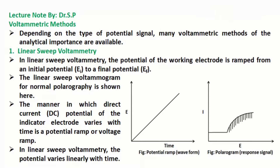Voltammetric methods: depending on the type of potential signal, many voltammetric methods of analytical importance are available. Linear sweep voltammetry: in linear sweep voltammetry, the potential of the working electrode is ramped from an initial potential EI to a final potential EF. The linear sweep voltammogram for normal polarography is shown here. The DC potential of the indicator electrode varies with time as a potential ramp or voltage ramp, and the potential varies linearly with time.